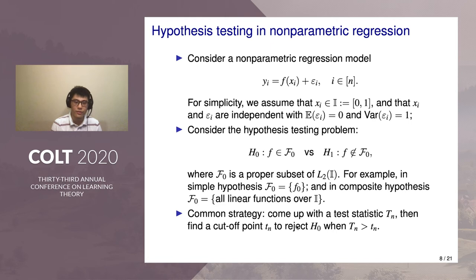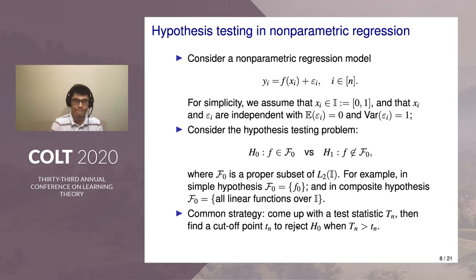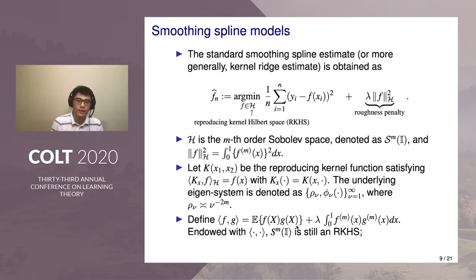As a common strategy for hypothesis testing, we usually come up with a test statistic T, then based on the distribution of Tn, find some cutoff value so that we reject the null when the test statistic is larger than that value. Usually, how to determine this cutoff is based on asymptotic approximation to the distribution of Tn, in order to control the type one error — the probability of wrongly rejecting the null when the null is true. Let's motivate our test statistic from a smoothing spline estimate, which can be obtained as a special case of a more general kernel regression estimate.